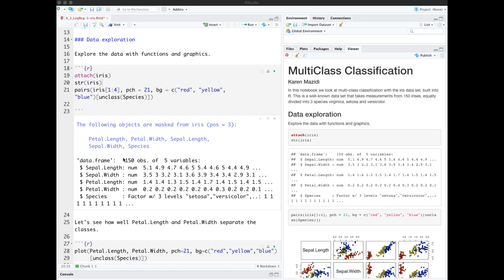The iris dataset is a very well-known dataset with 150 observations, 50 each of three classes of iris flower: Setosa, Versicolor, and Virginica.